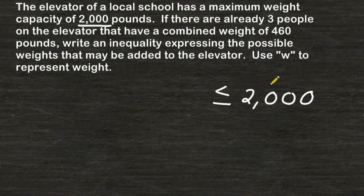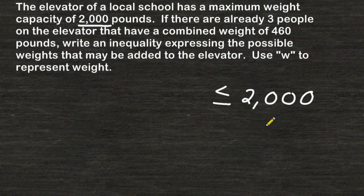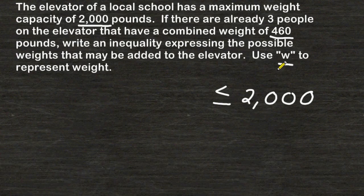Because 2,000 pounds is the maximum weight capacity in this problem, the weight we add may be equal to 2,000 or it may be less than 2,000, because it is okay to add weight on the elevator that is less than 2,000 pounds. There are three people on the elevator with a combined weight of 460 pounds, and we have to use W to represent the possible weights that we may add to the elevator.